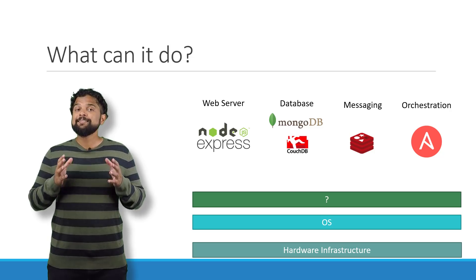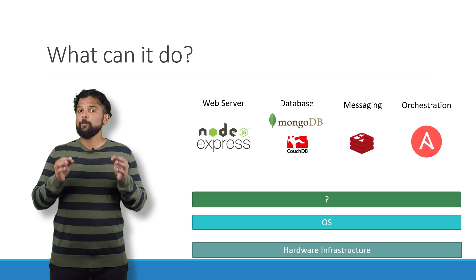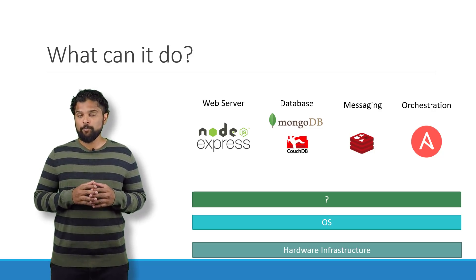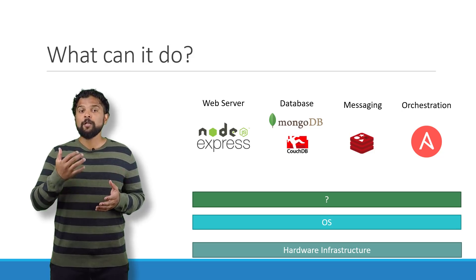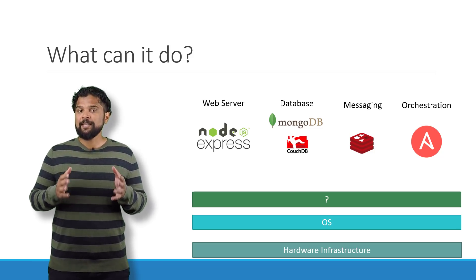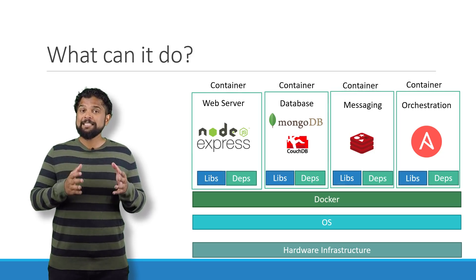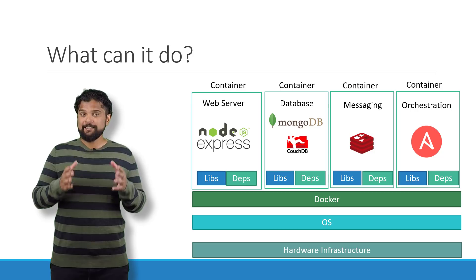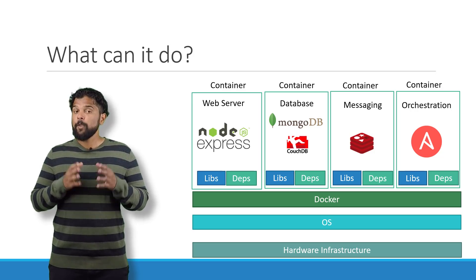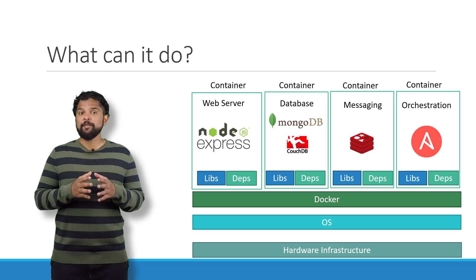So I needed something that could help us with the compatibility issue — something that would allow us to modify or change these components without affecting the other components and even modify the underlying operating system as required. And that search landed me on Docker. With Docker, I was able to run each component in a separate container with its own libraries and its own dependencies, all on the same VM and the OS, but within separate environments or containers.